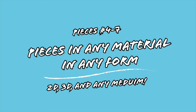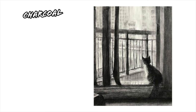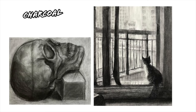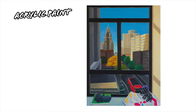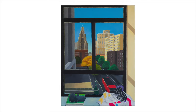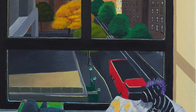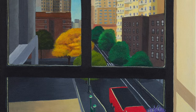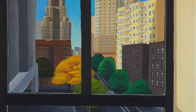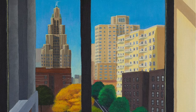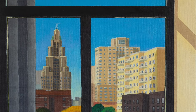Pieces four through seven can be anything you want in any medium. Charcoal is a great medium to create moods very quickly and effectively, depending on the method of application. Acrylic paint is a classic medium and opens the door to express some color. Consider your color palette beforehand by experimenting with colors or adopting a color palette from another piece of art. Focus on a preparatory sketch, brushstroke techniques, and the blending of those colors.